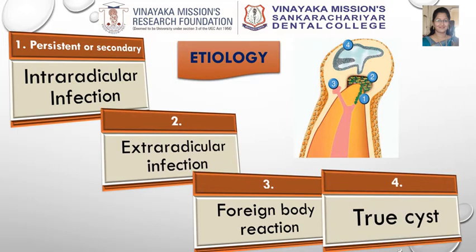Though root canal treatment is done with utmost care, many cases tend to fail due to some known or unknown reasons. These include intra-radicular infections either caused by persistent bacteria like E. faecalis, which has the ability to withstand normal antimicrobial procedures, or secondary infections caused by coronal micro leakage. Next is the extra-radicular infection from bacteria like Actinomyces or foreign body reaction from cellulose-like material, both occurring in the periradicular area.